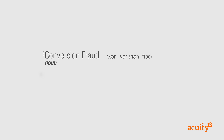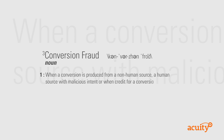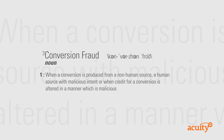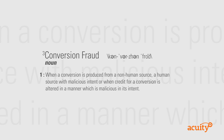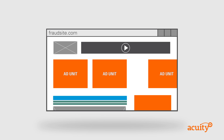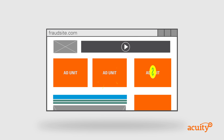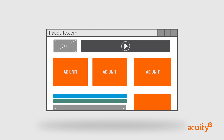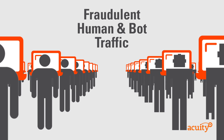Conversion fraud, or attribution fraud, occurs when a conversion is produced from a non-human source, a human source with malicious intent, or when credit for a conversion is altered in a manner which is malicious in its intent. This type of fraud comes in many forms, with the following being the most prevalent. In a process often referred to as cookie bombing, fraudsters manipulate the distribution or placement of ad units and tracking codes to ensure they secure unjust credit for a conversion. Conversions may also be artificially completed by both human and non-human users for their own gain.